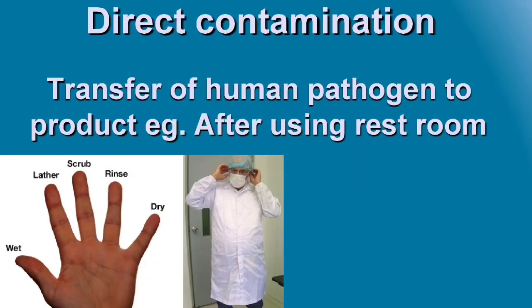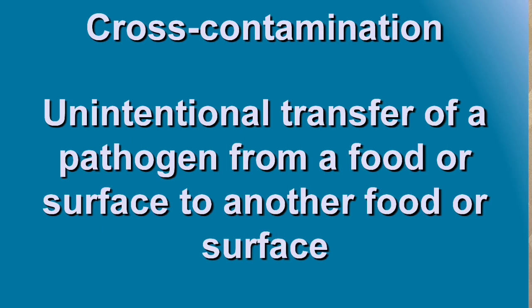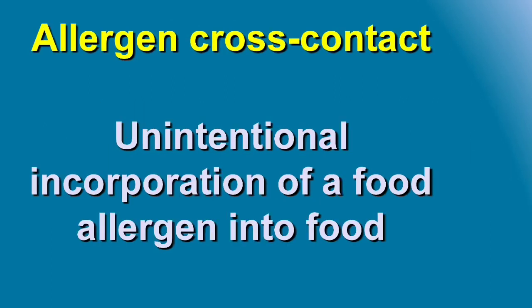Hand washing is very important in the food industry. Improper hand washing leads to direct contamination — the transfer of human pathogens when a person visits restrooms and touches products without washing hands. Cross-contamination is the unintentional transfer of a pathogen from one food or surface to another. Allergen cross-contact is the unintentional incorporation of a food allergen into another food.